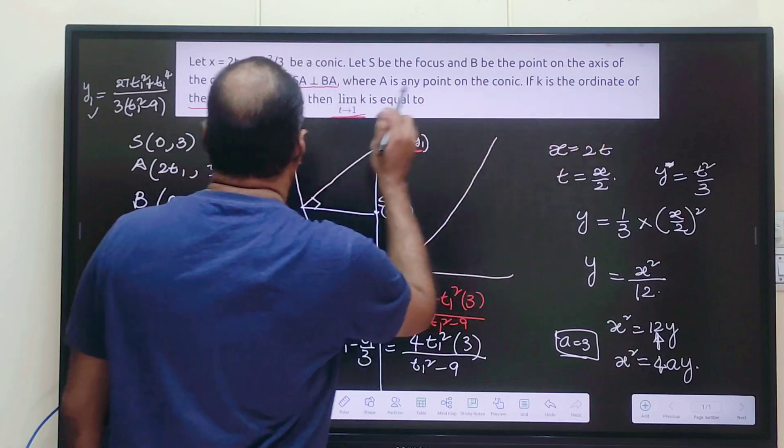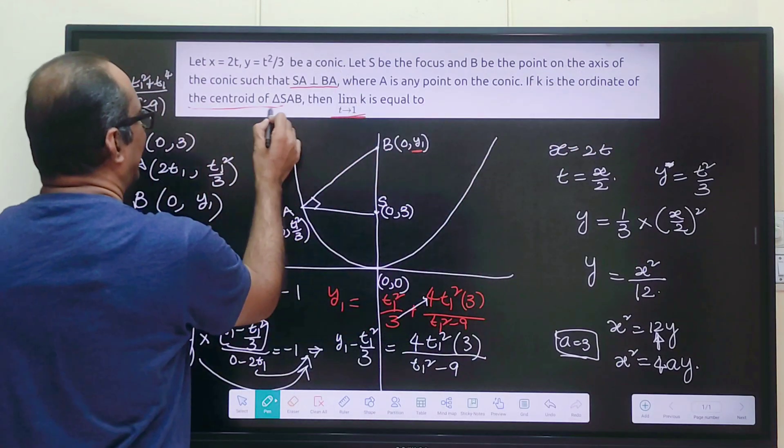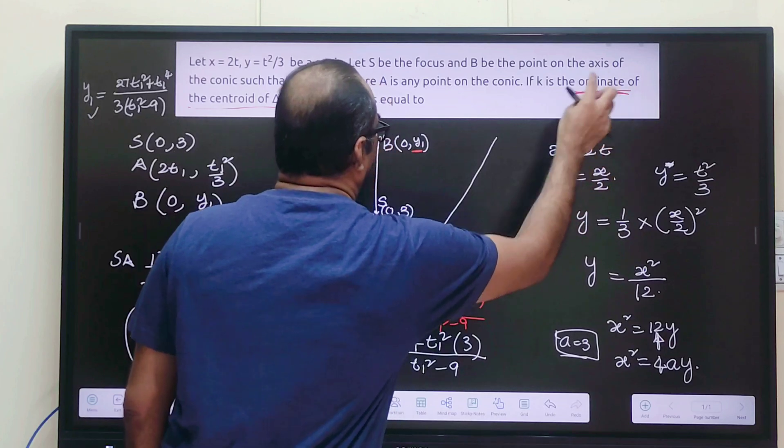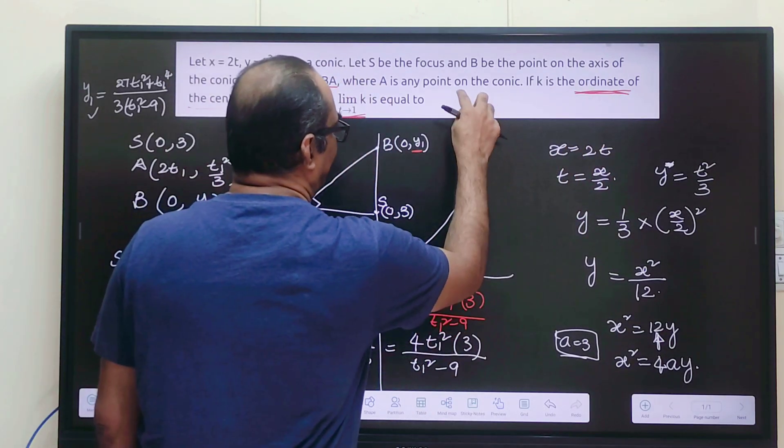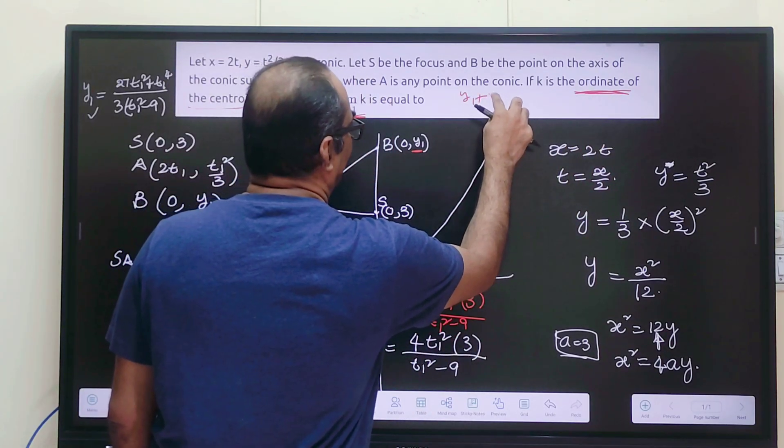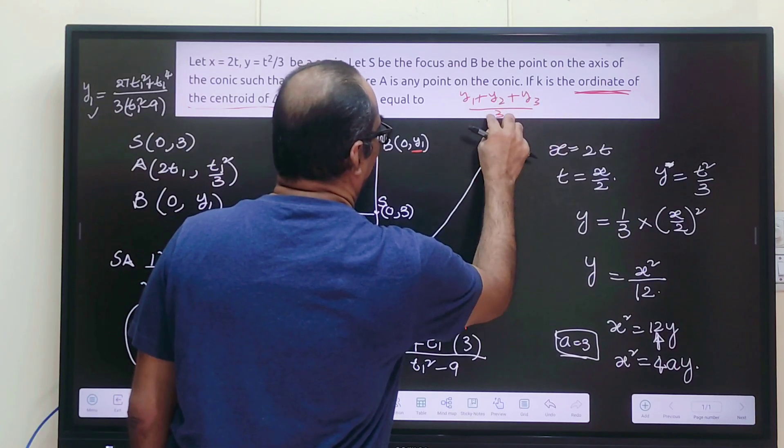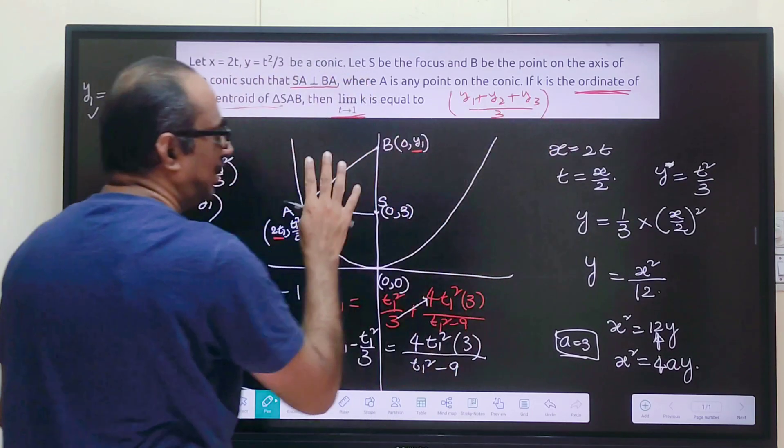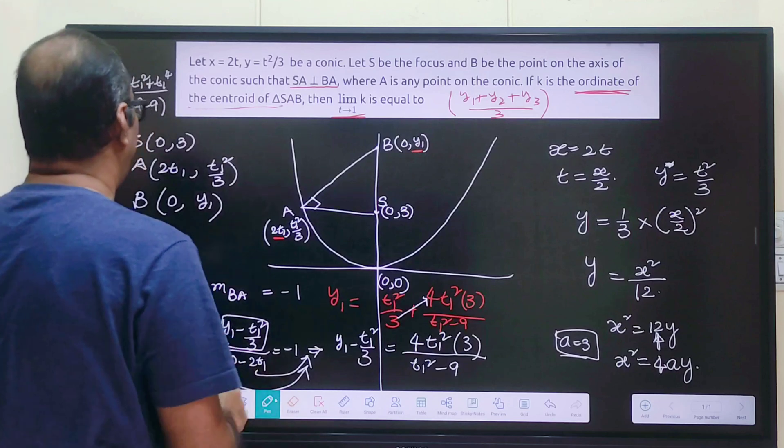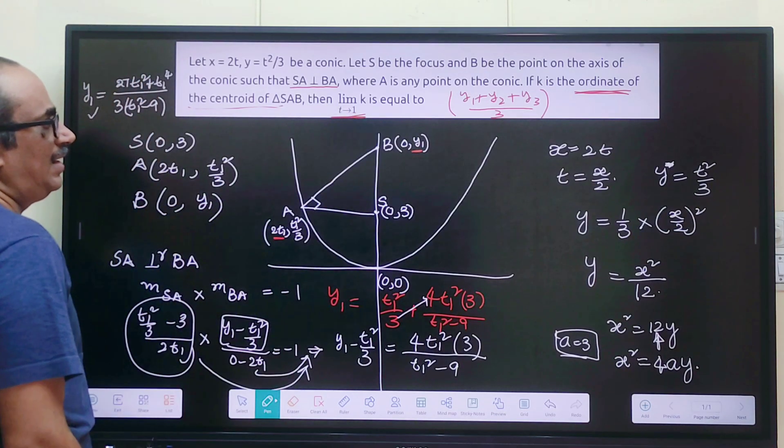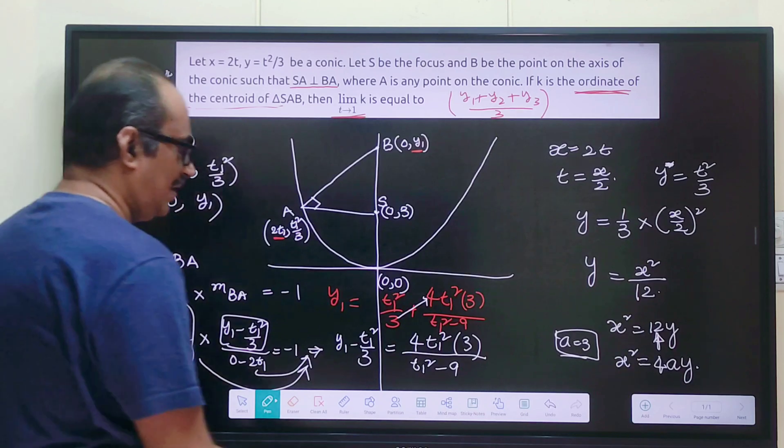They said that k is the ordinate of centroid of triangle SAB. Ordinate means y coordinate. Y coordinate will be (y₁ + y₂ + y₃)/3. So let us add all those y coordinates and divide by 3 and substitute and put limit t tends to 1.